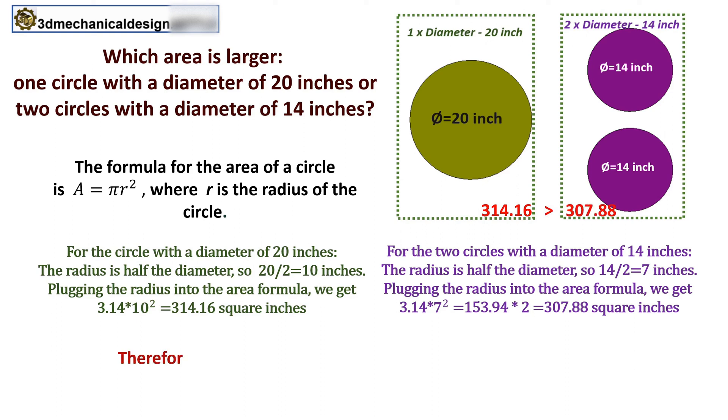Therefore, the area of one circle with a diameter of 20 inches is larger than the combined area of two circles with a diameter of 14 inches.